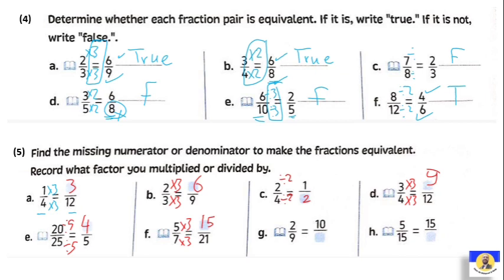Two over nine equals ten over what? Two becomes ten by multiplying by five, so nine by five equals forty-five. Next: five over fifteen — five becomes fifteen by multiplying by three — so fifteen by three equals forty-five. Be careful here: some students write five, but we still need to multiply fifteen by three. Three by five equals fifteen, carry one; three by one equals three plus one equals four — so the answer is forty-five.